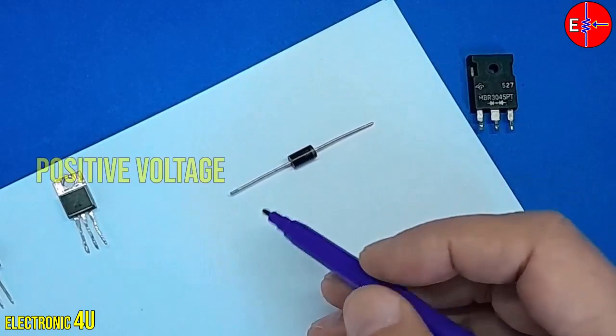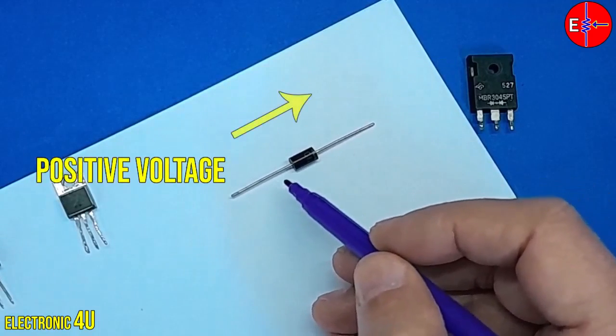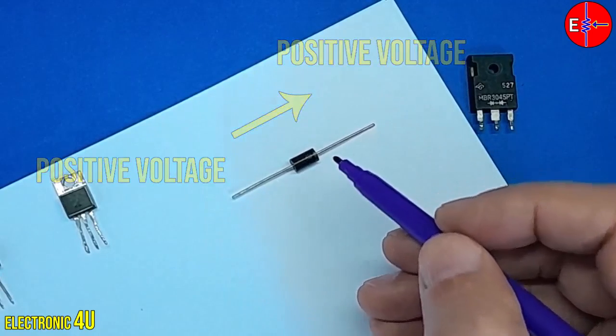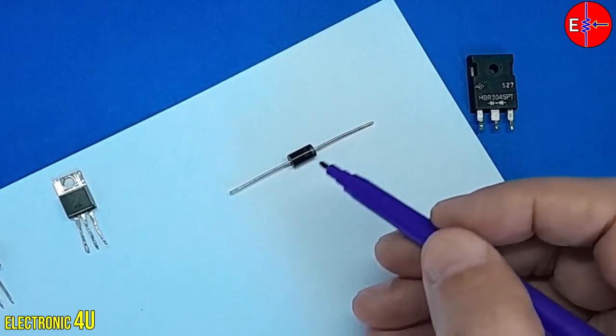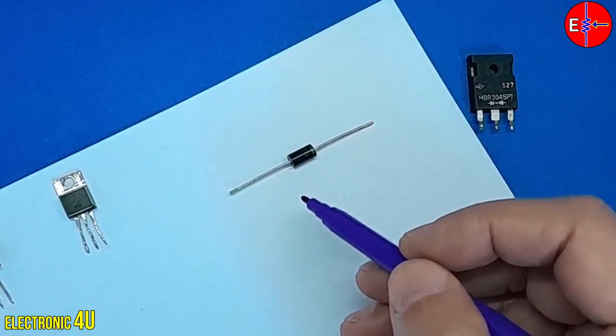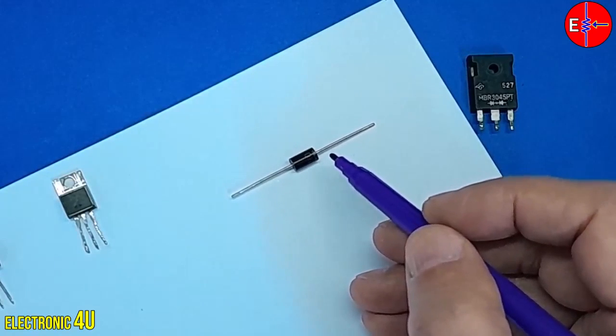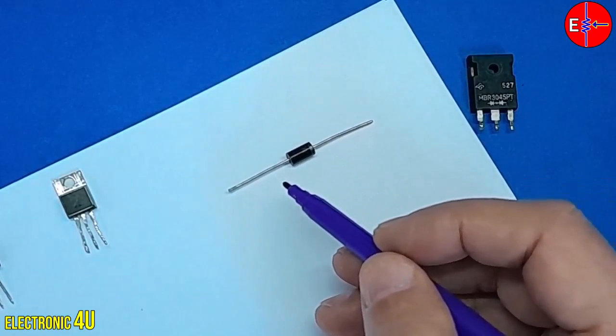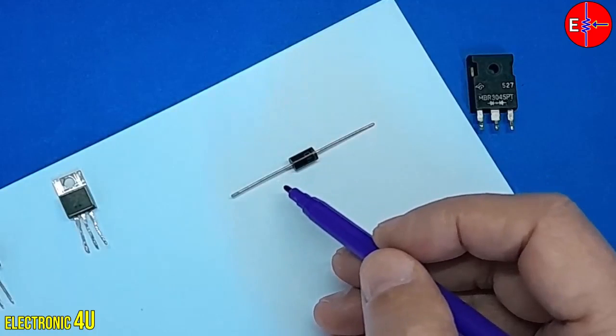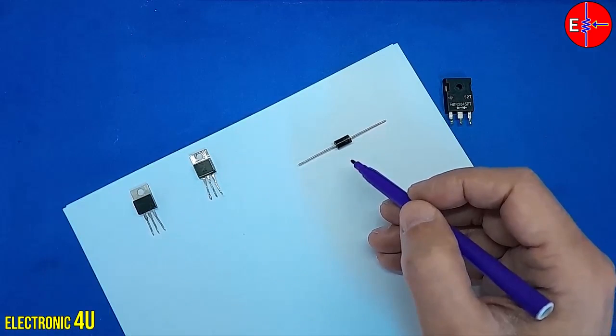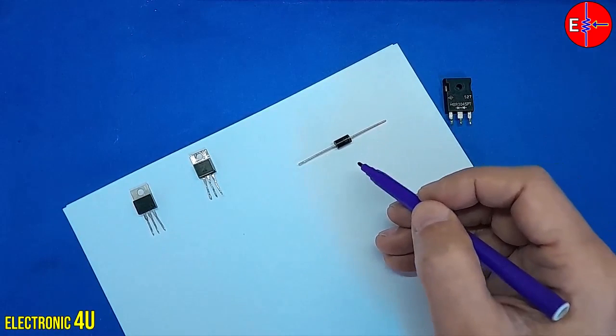The positive voltage is entered from the unlined head and the same positive voltage comes out from the lined head. Diodes can be used the other way around. That is, we enter the negative voltage on the side with the line and receive the same negative voltage on the side without the line. Some of this voltage is used to turn on the diode, which depends on the type of diode.